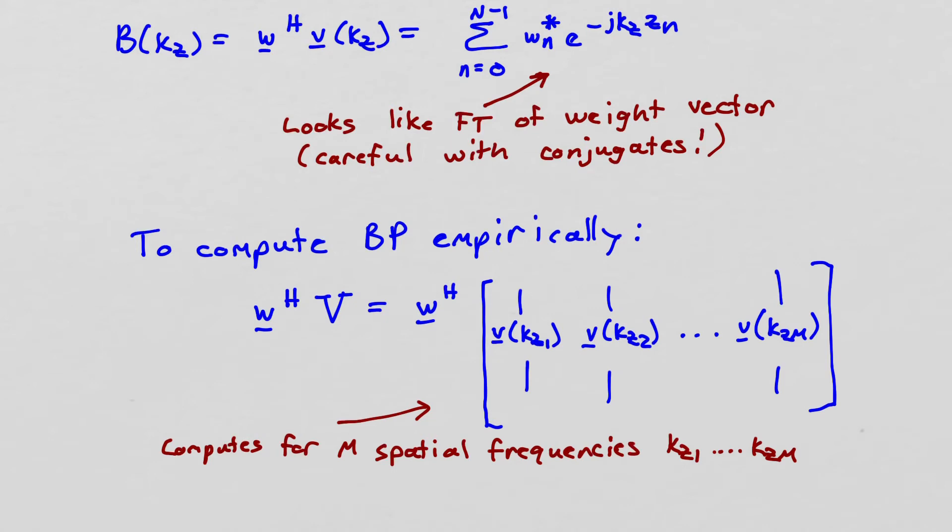Notice, right, I've rewritten our calculation of the beam pattern. It's just w Hermitian v of kz. And that's an inner product of two vectors. And I can write out what that summation looks like.